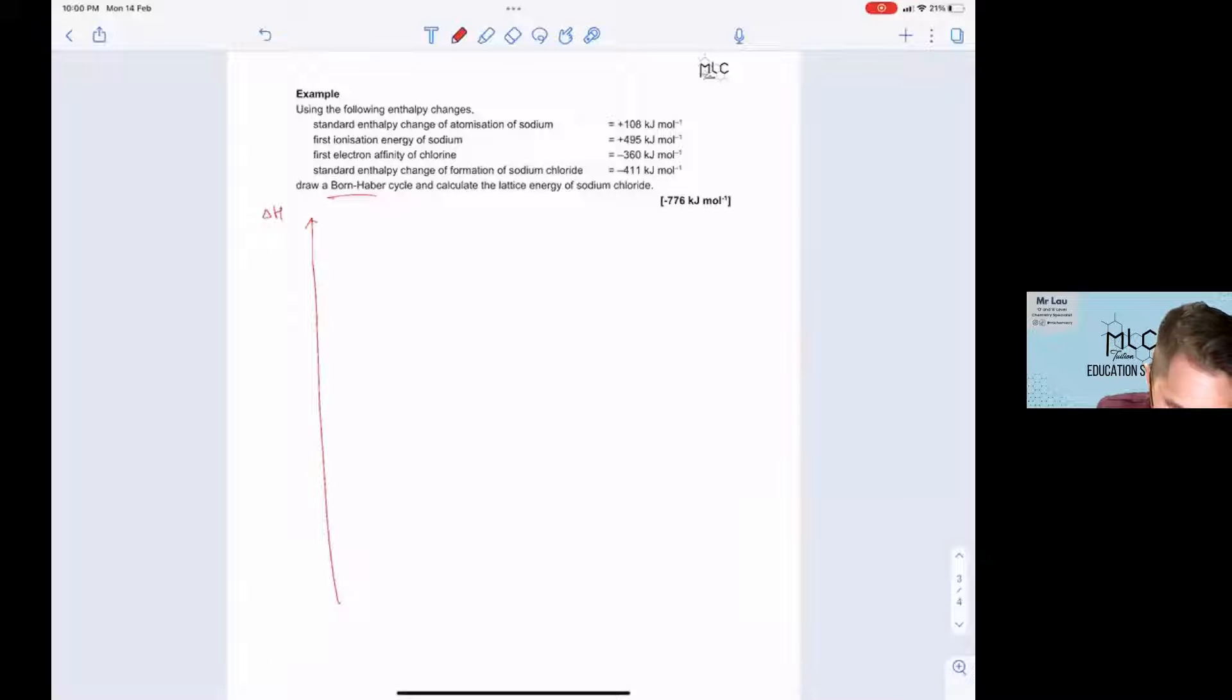We'll start off with your F which means delta H formation. So delta H formation of sodium chloride means from sodium solid, chlorine gas to give you your NaCl solid. So this delta H of formation where your elements must be zero. Delta H formation has a value of minus 411 over here.